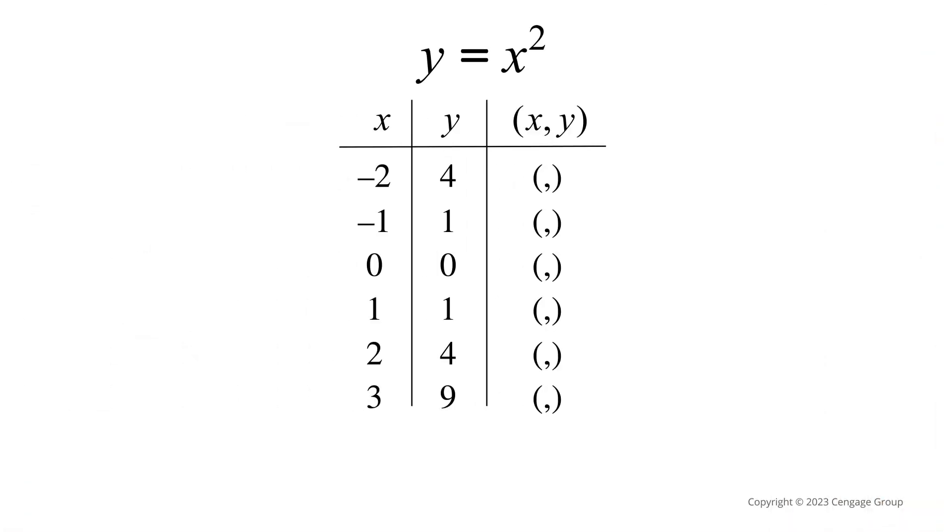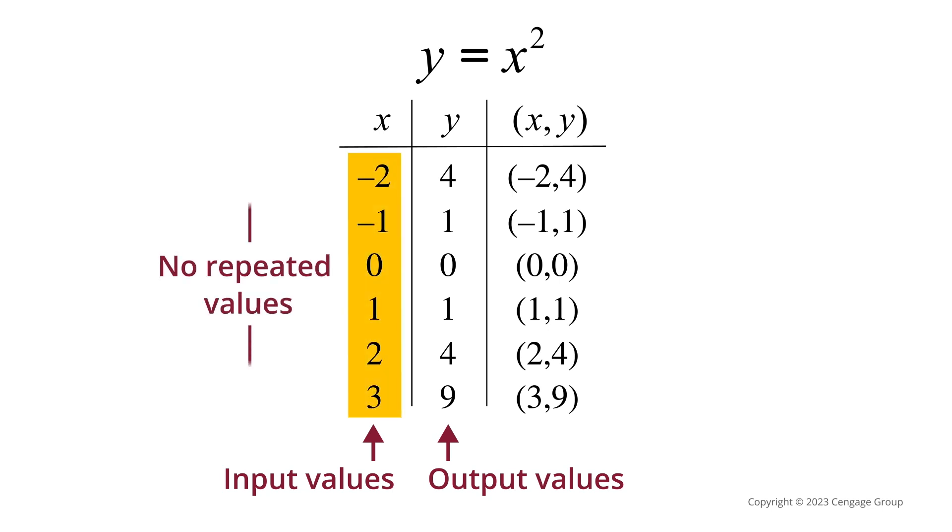Here's a table for the function y equals x squared. Notice that each input value in the first column of the table corresponds to exactly one output in the second column. In other words, no x value appears more than once with different y values.